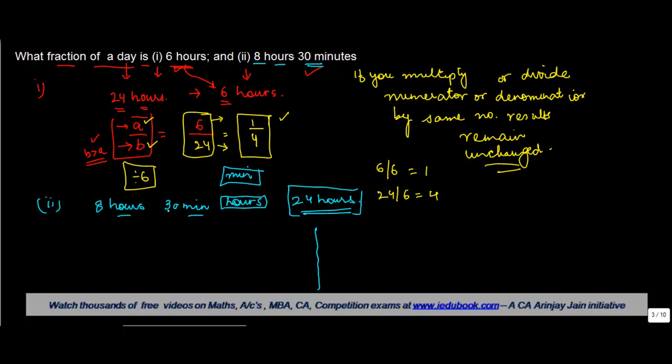So 8 hours 30 minutes - now how many minutes do you have in an hour? We know that 1 hour is equal to 60 minutes. So 8 hours will be equal to how much? 8 into 60, or 480 minutes. And this is 8 hours and 30 minutes, so you add another 30 minutes to this, you get 510 minutes.